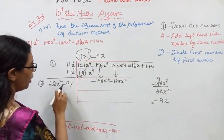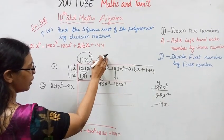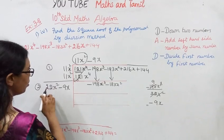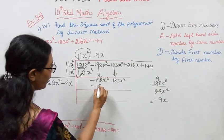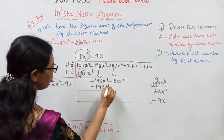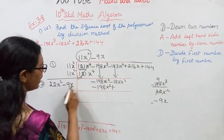x² into x is x³. Minus into minus is plus. 9 times 9 is 81.